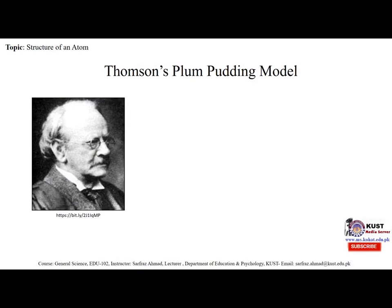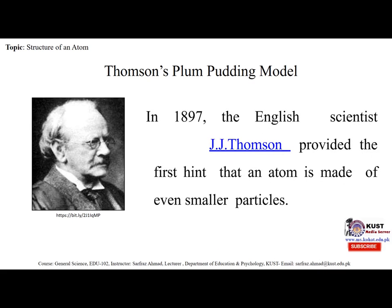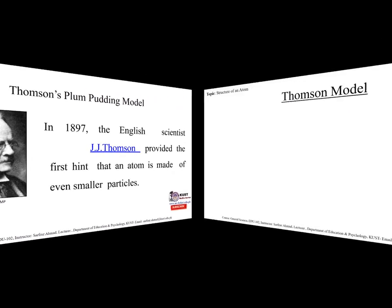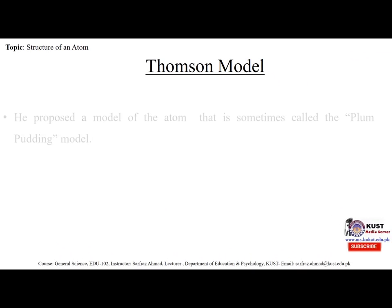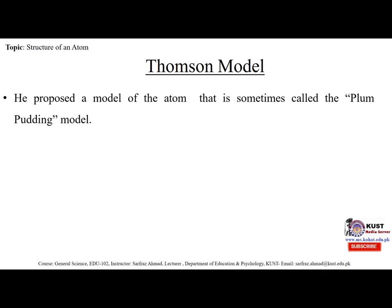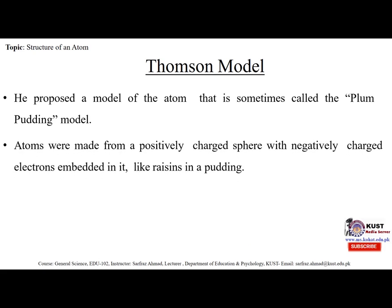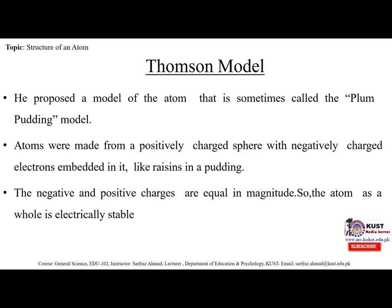Now we discuss Thomson's plum pudding model. In 1897, the English scientist J. J. Thomson provided the first hint that the atom is made up of even smaller particles. In Thomson's model, he proposed a model of an atom sometimes called the plum pudding model. Atoms were made from a positively charged sphere with negatively charged electrons embedded in it like raisins in a pudding. The negative and positive charges are equal in magnitude, so the atom as a whole is electrically neutral.